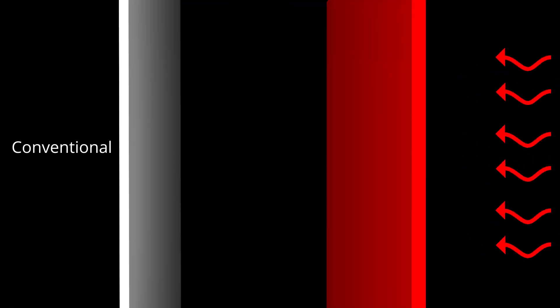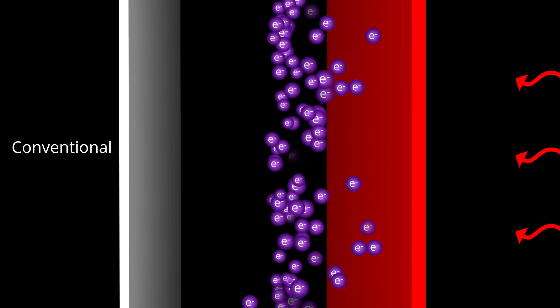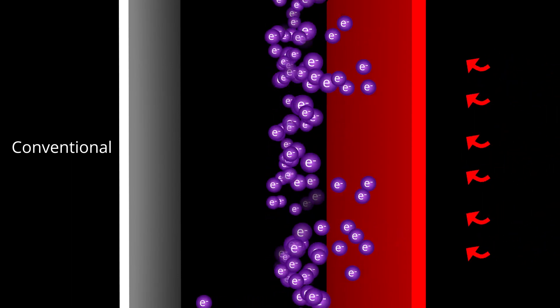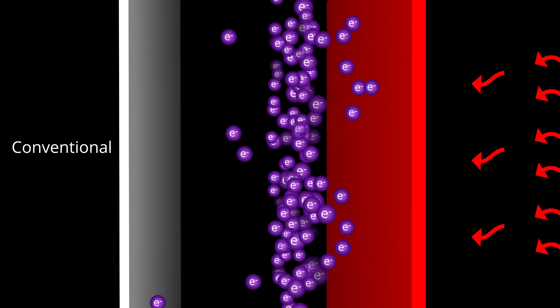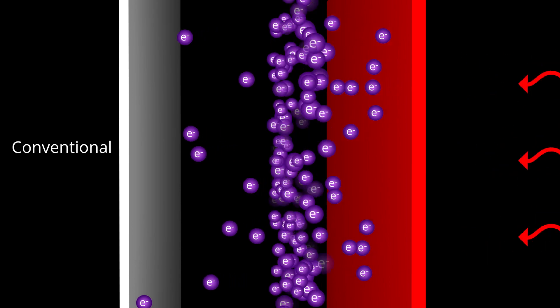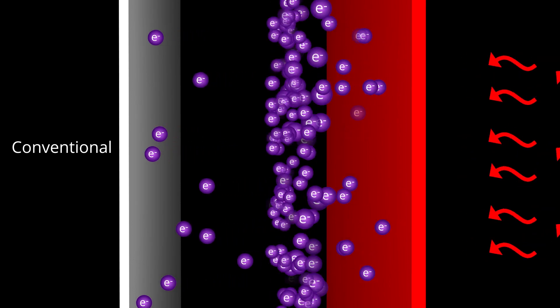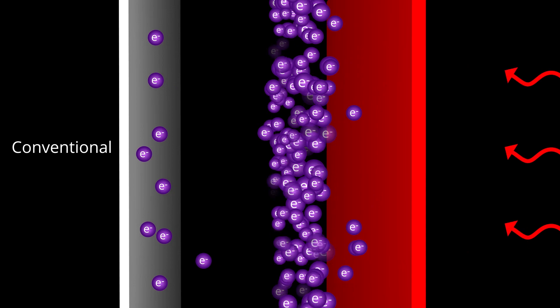Heat from the core causes electrons to boil off of the hot plate, like steam from a boiling kettle. These electrons traverse the vacuum gap and condense on the cold plate, generating electricity.